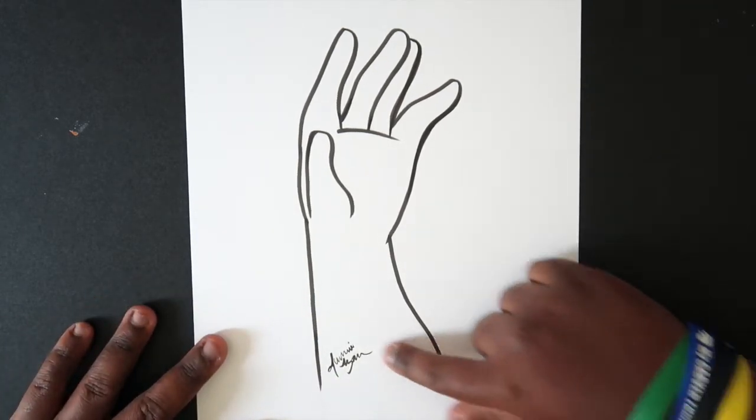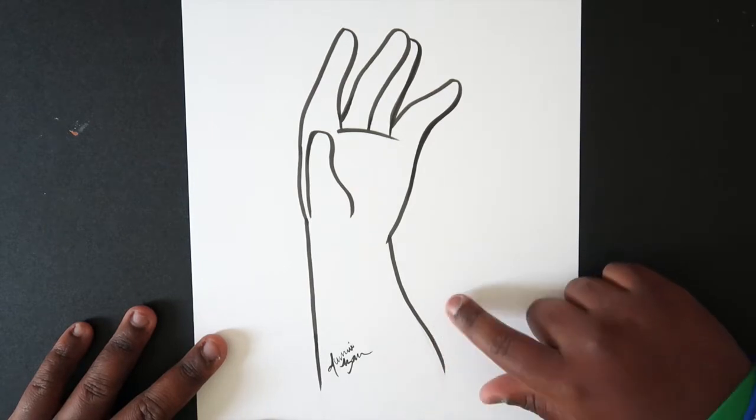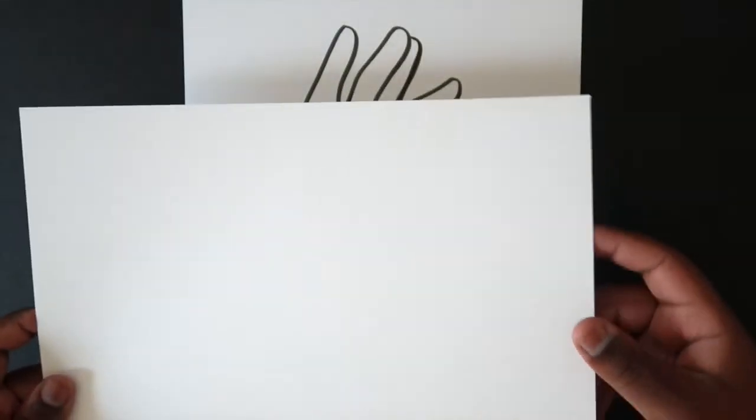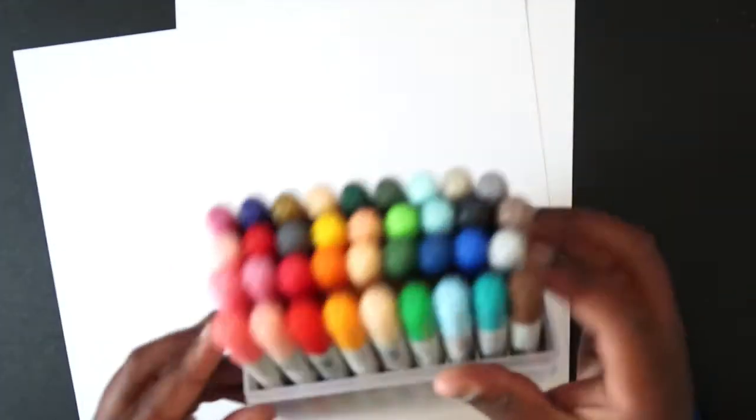So we're going to do that with Copic markers. Now what you're going to need is your line work like this hand I have drawn here. You're going to need a separate sheet of paper and this is the same paper I'm using for this. I'm using thick cardstock and then you're going to need some Copic markers and I have a lot of them. So let's get started.